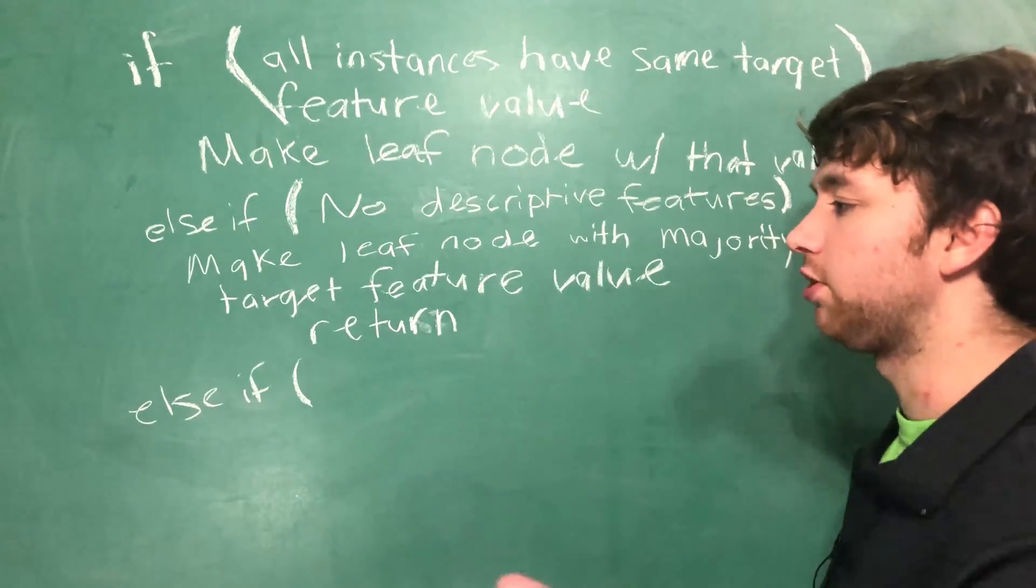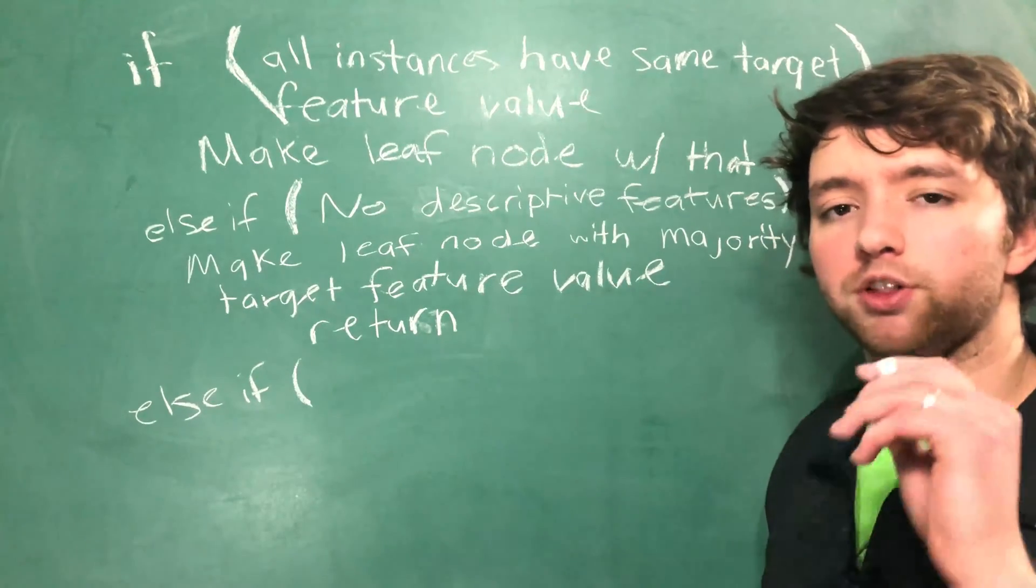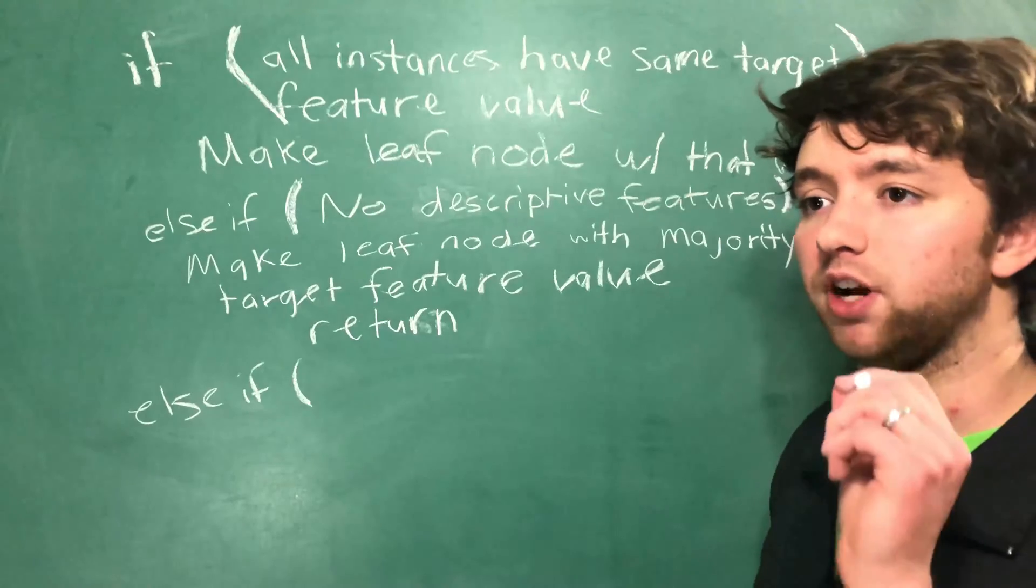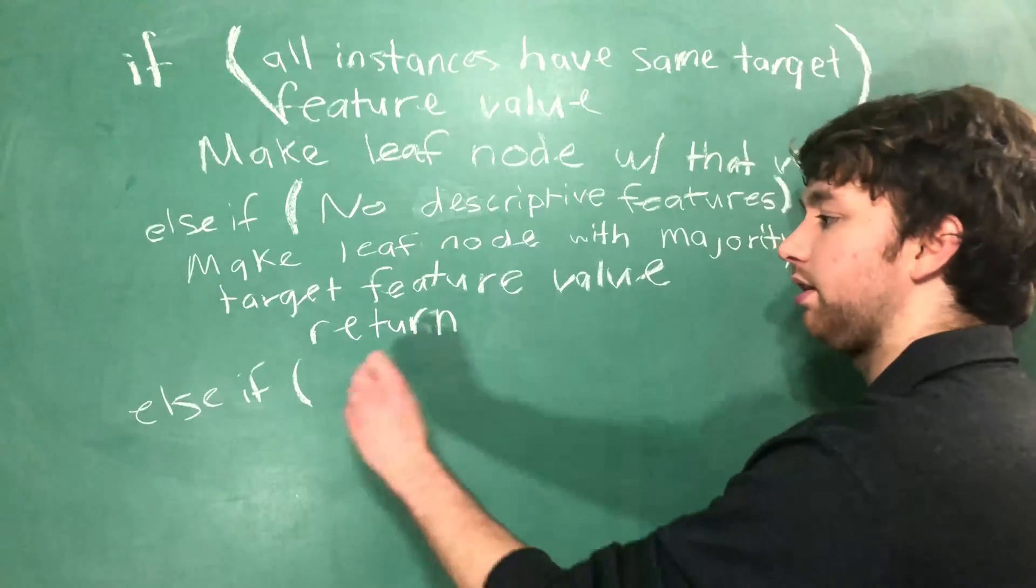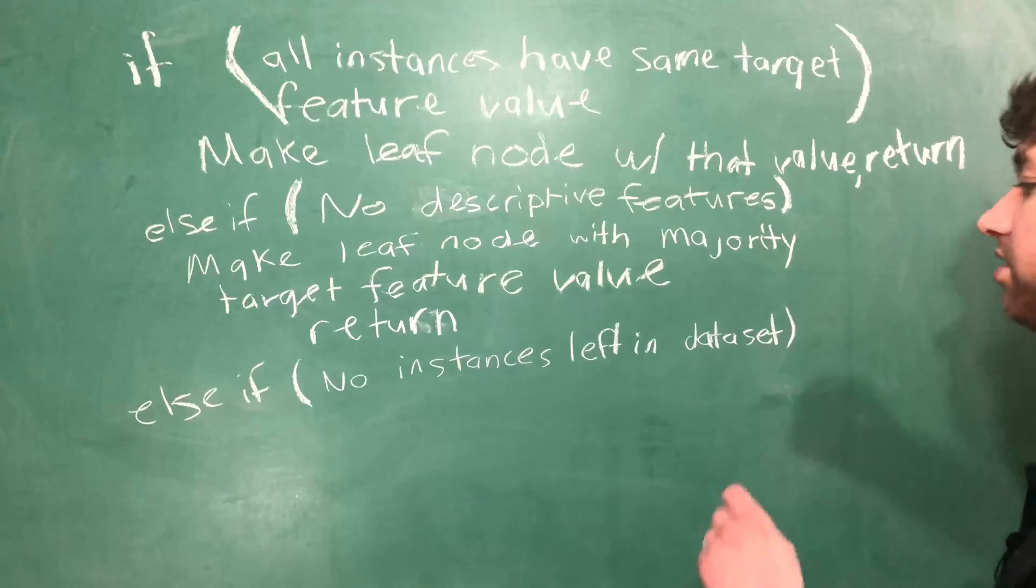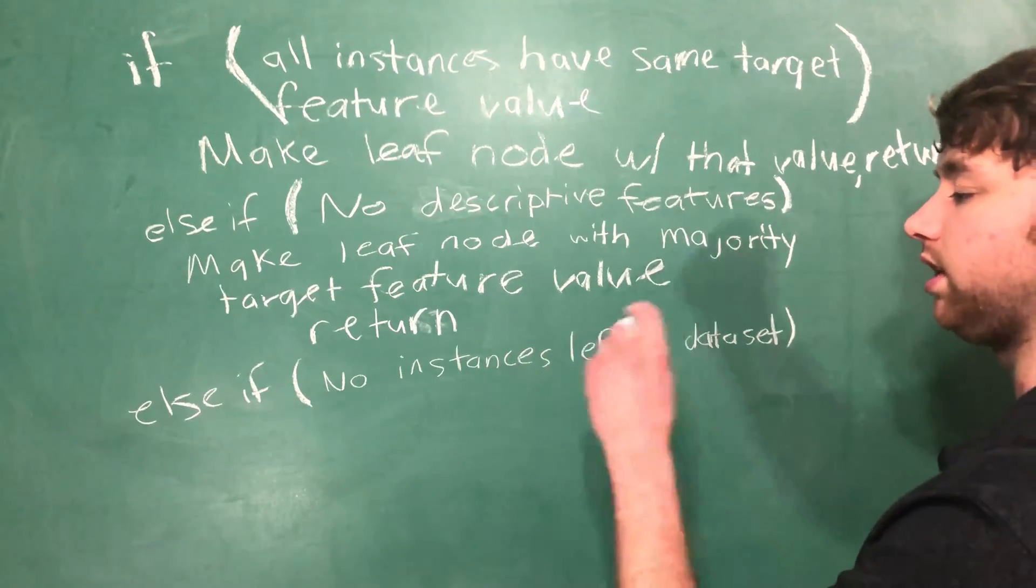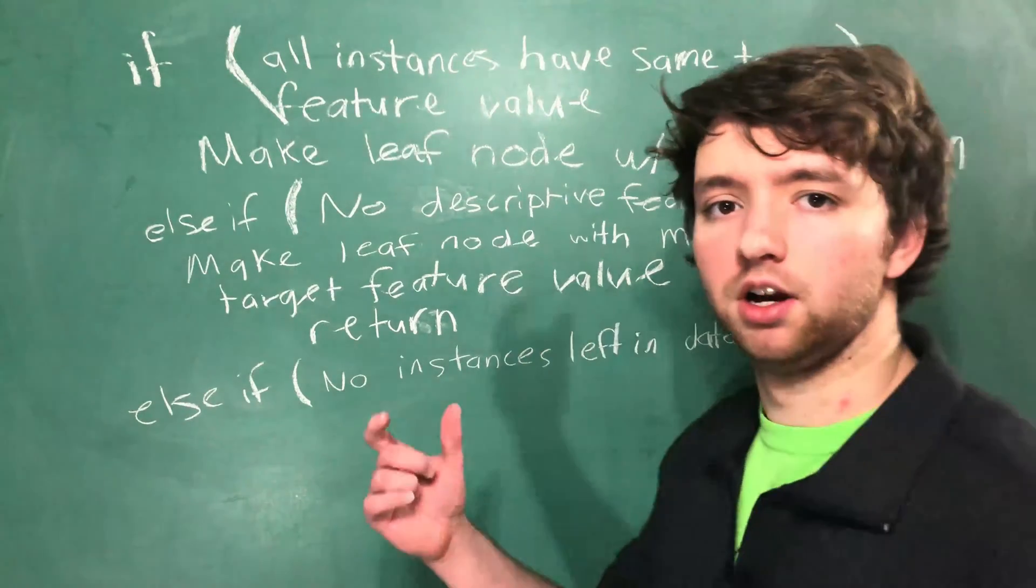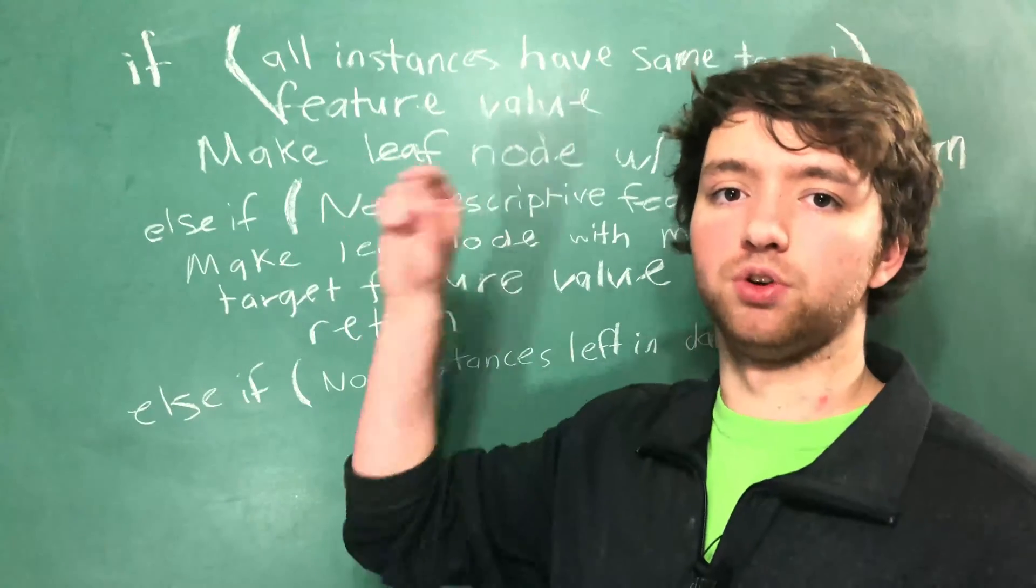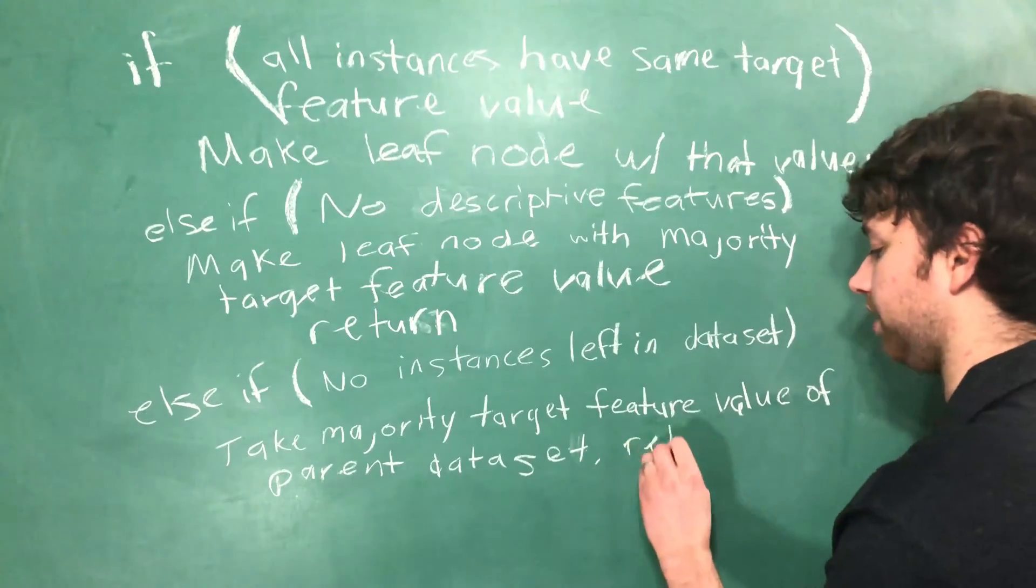If we keep branching our data and we get to the point where there are no instances left for a particular branch, this case is going to get hit. What this is going to do now is actually take the majority of the parent node data set and once it does that it's going to return.